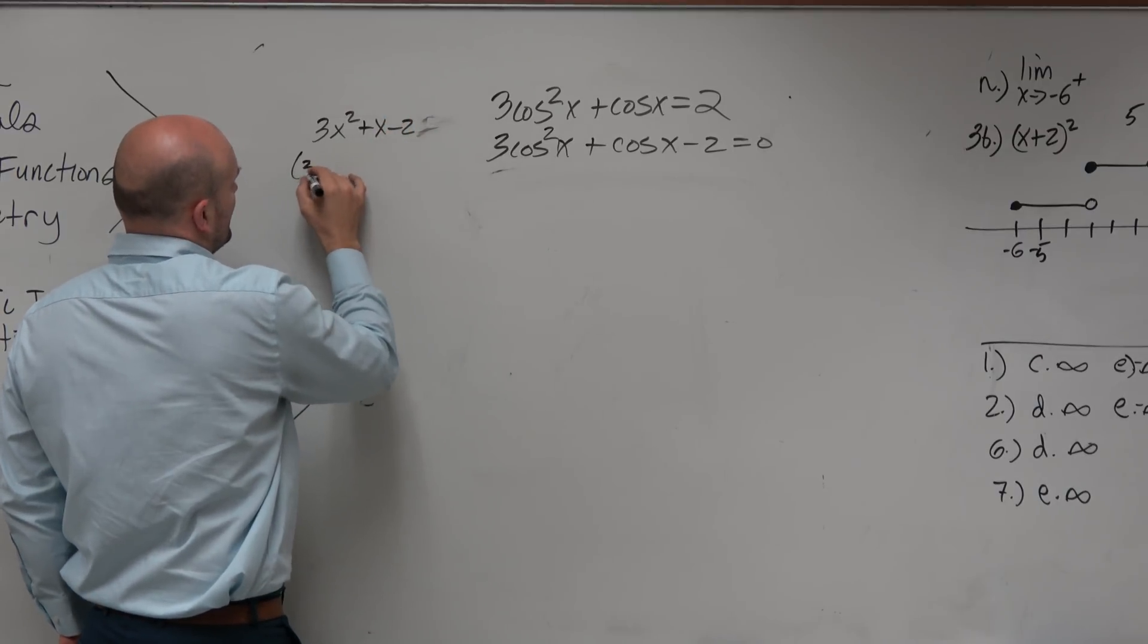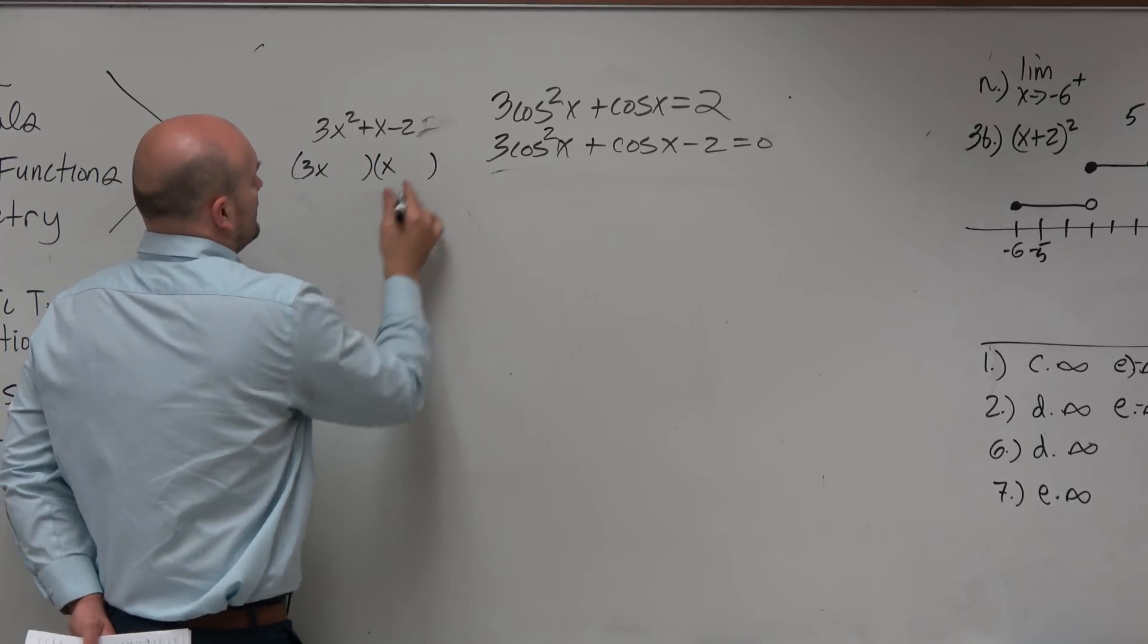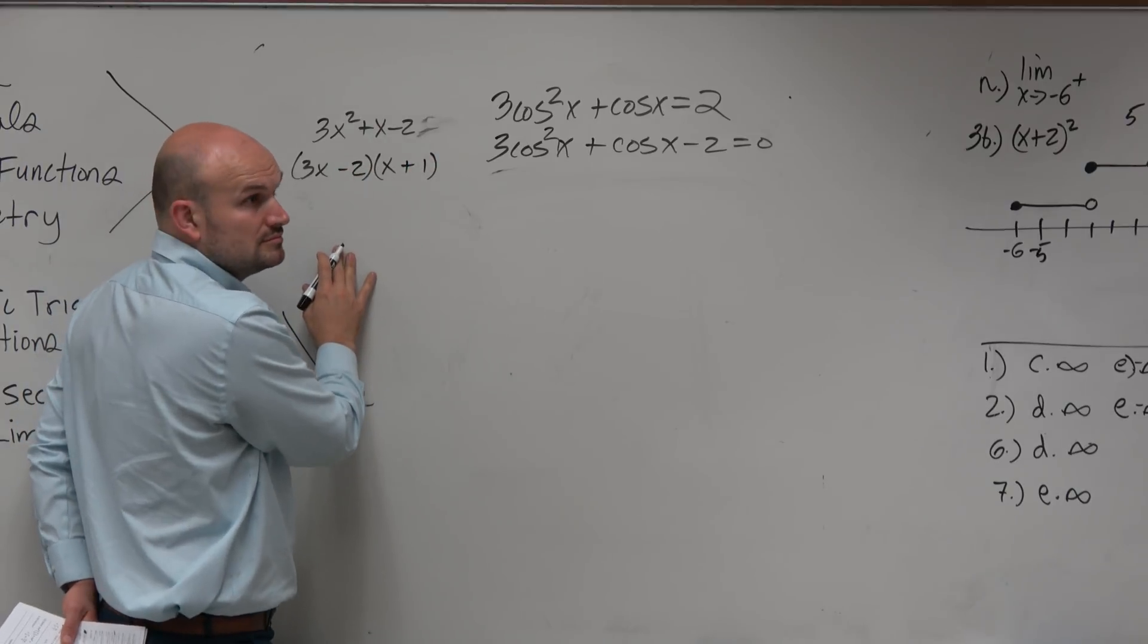Well, I know one term has to be 3x, this has to be x. To get negative 2, let's see, positive 1, negative 2? Yes?